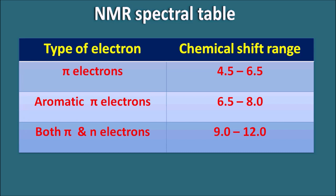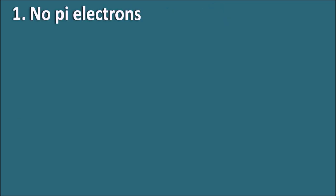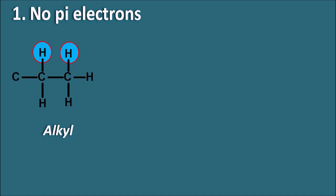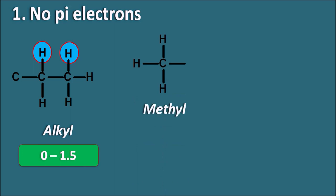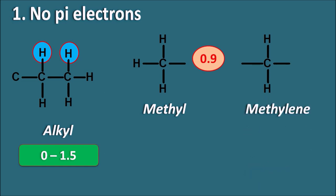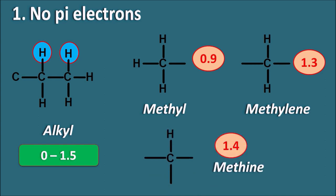Starting with protons having no pi electrons — simple alkyl protons. These are attached to carbon with no pi bond or lone pair electrons, so they fall in the range of 0 to 1.5 ppm. For example, methyl protons appear at approximately 0.9 ppm, methylene protons at 1.3 ppm, and methine protons at 1.4 ppm. These values will change based on the overall structure and other functional groups present.